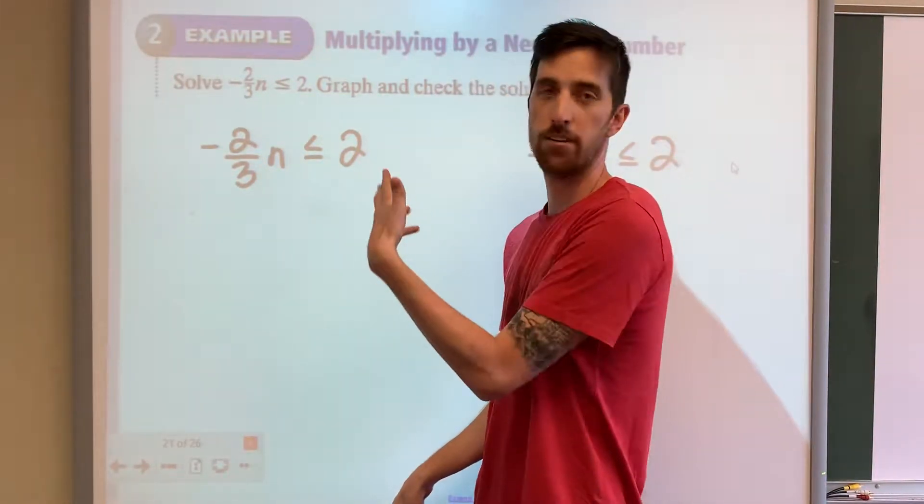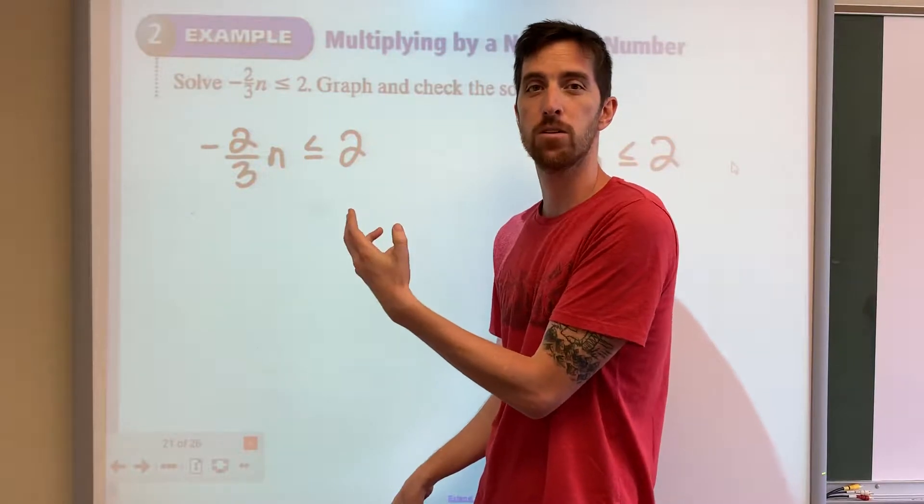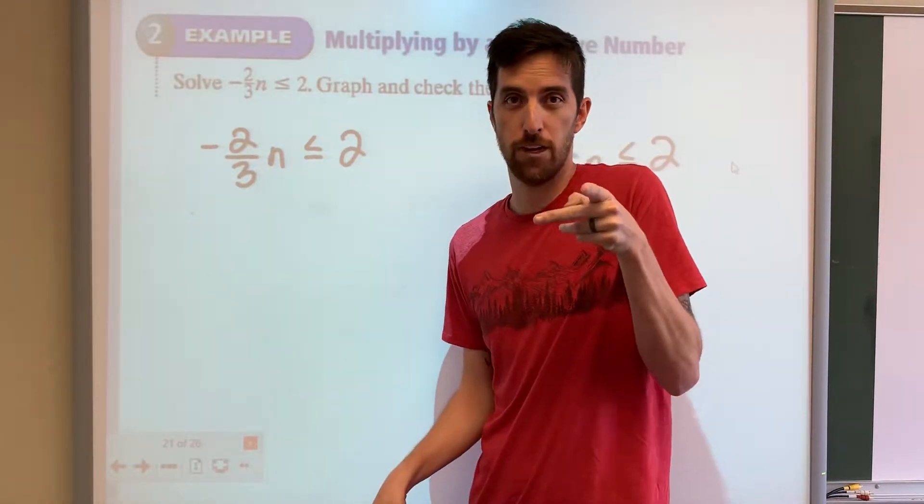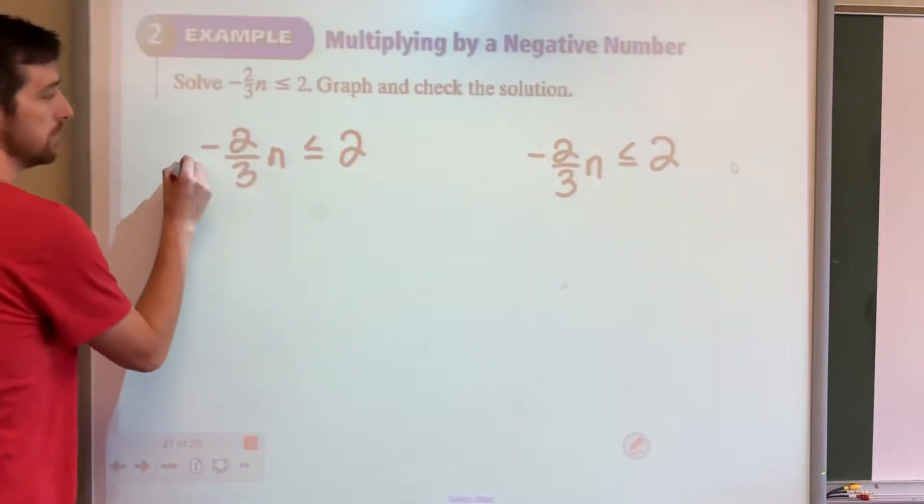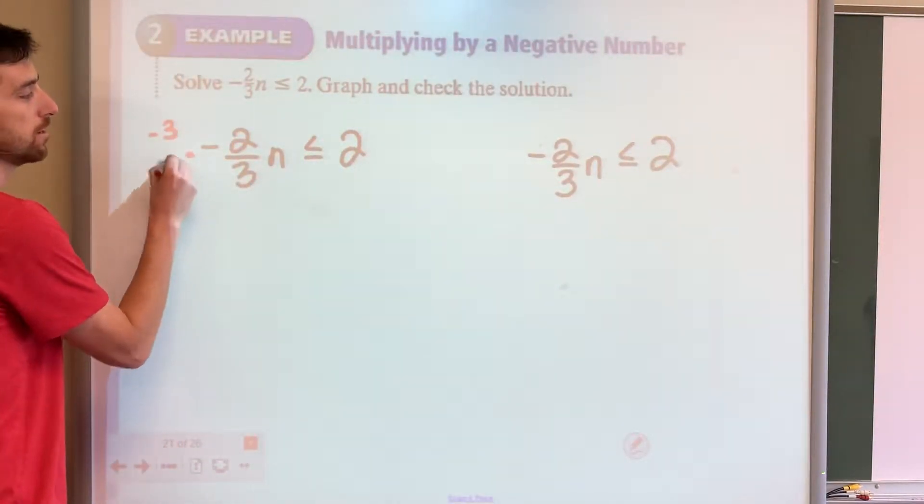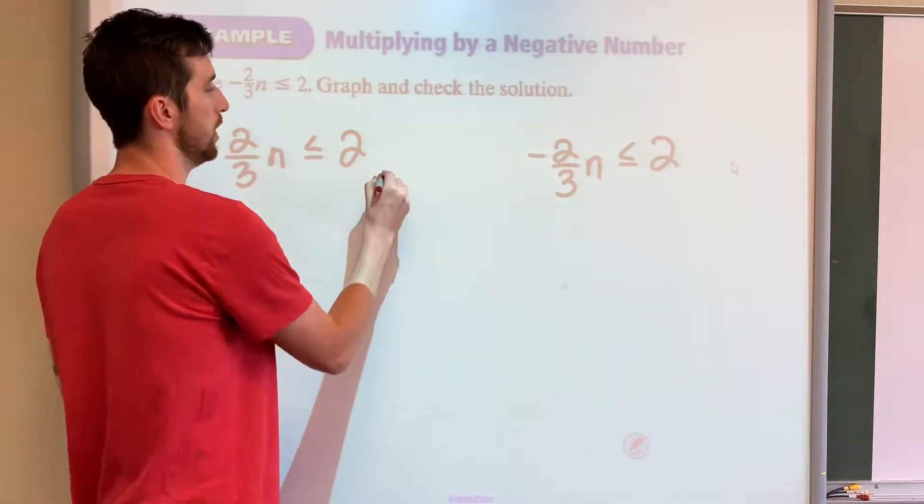So one way you can get rid of a fraction in front of a variable is to multiply by the reciprocal, which means you take that fraction and you just flip it upside down. So that would be times negative 3 over 2. We'd have to do the same thing on the other side.